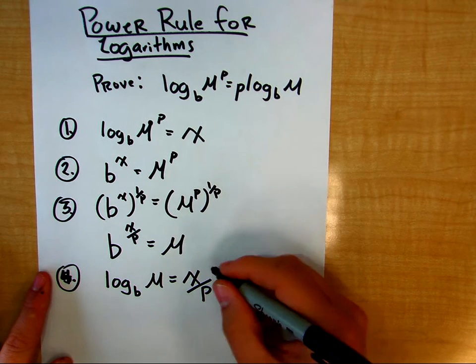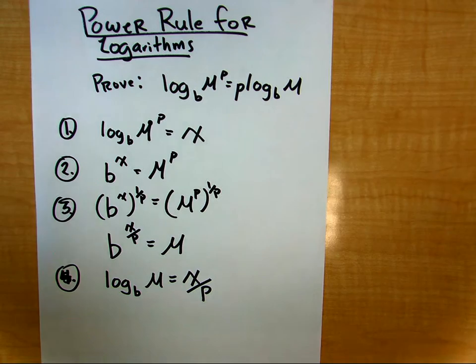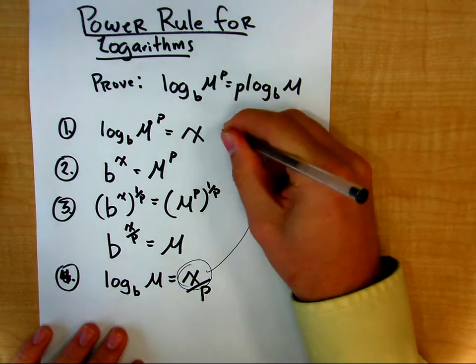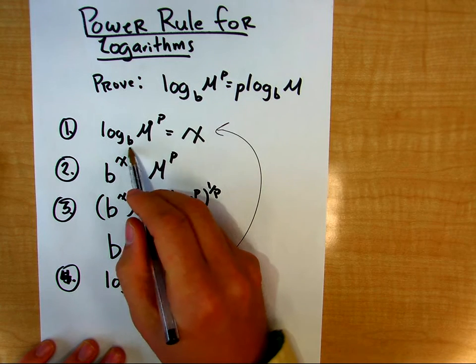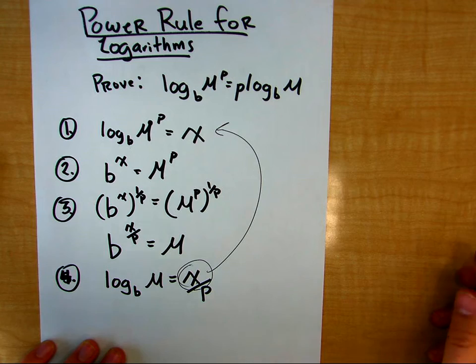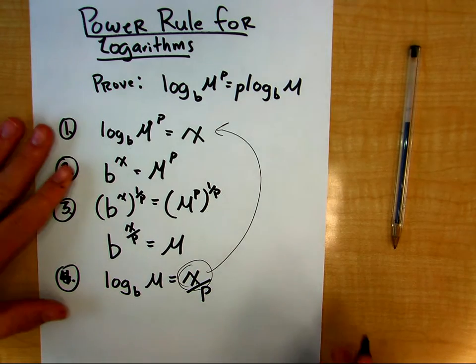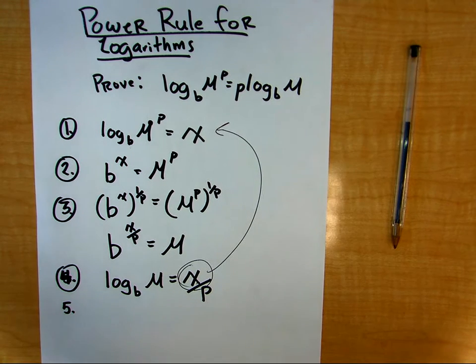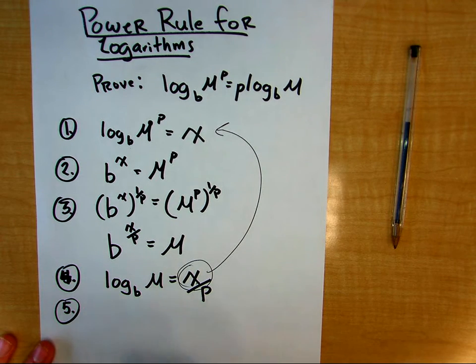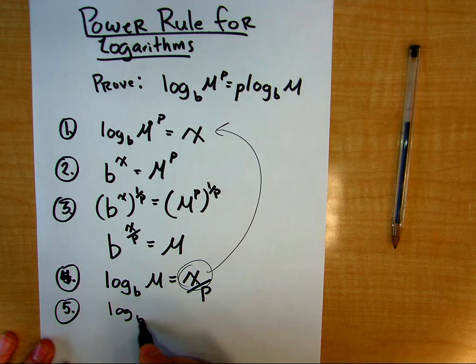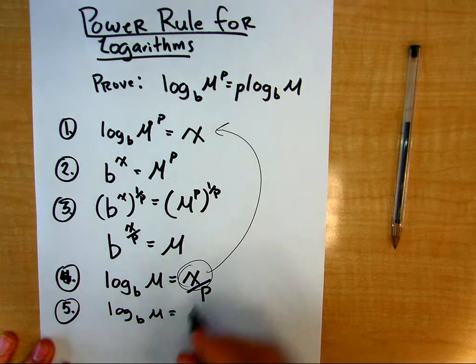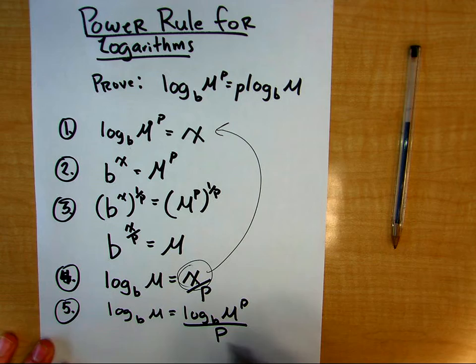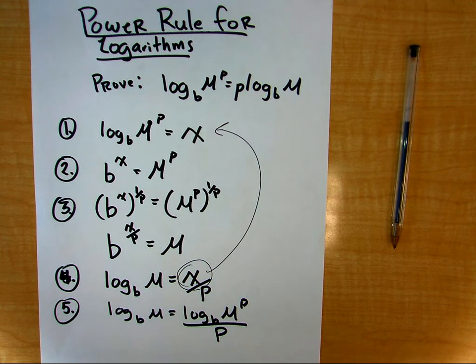So if we look earlier, we stated earlier in step 1 that x is equal to log base b of m raised to the p power, right? So we're going to use that in step 5 here. We're going to say that log base b of m is equal to log base b of m raised to the p power over p.